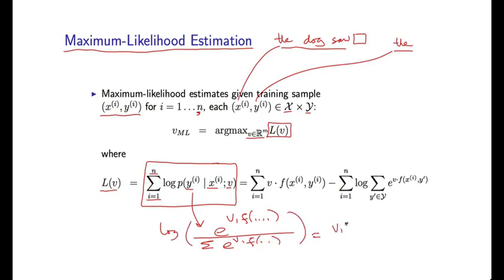Okay. And so this expression here, to be more explicit, has this form where I have sum i equals one to n and v dot f x i y i.